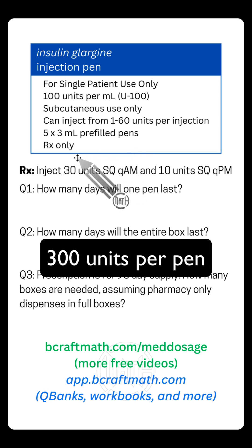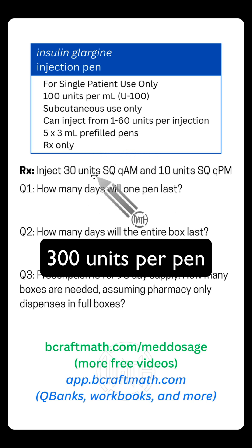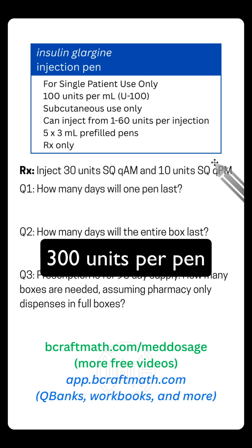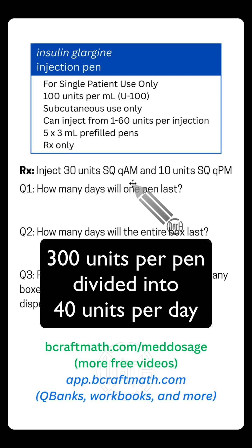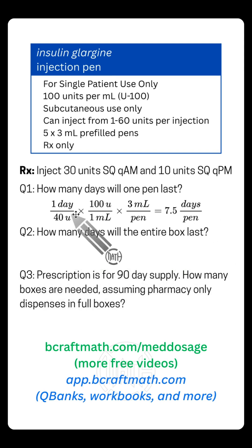Take those 300 units and divide by the number of units this person will use every day. They're going to use 40 units — 30 units in the morning and 10 units in the evening. So take the 300 units in one pen, divide by 40 units used per day, and you get seven and a half days per pen.